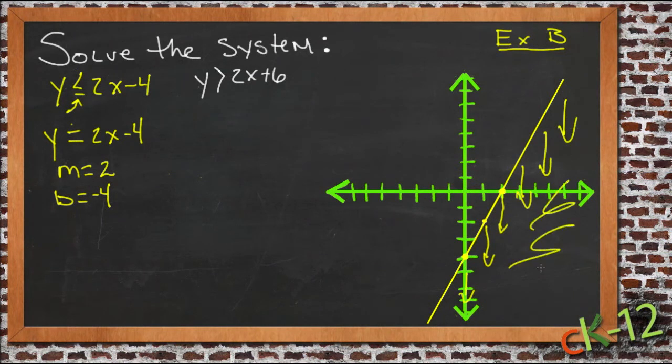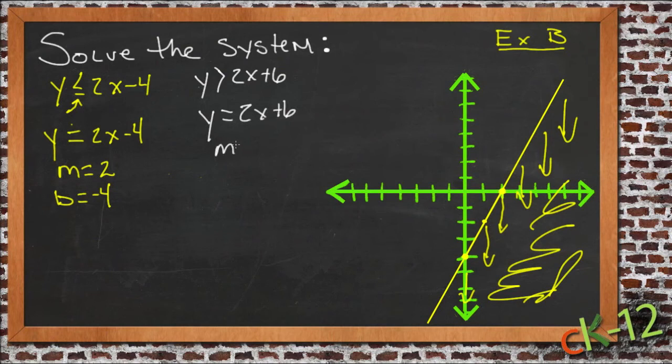So then we graph the other one. We'll take a look at it, but this one we also need to graph the line first. So we'll graph y equals 2x plus 6, so this one has a slope of m equals 2 also, same slope, and b y-intercept is 6. So this one has a point at 6, and then it could also do rise 2, run 1, or down 2, back 1 to find our actual line.